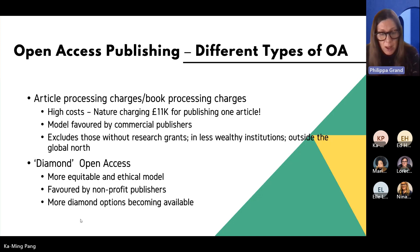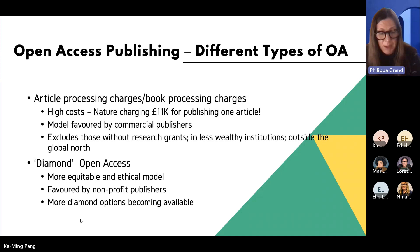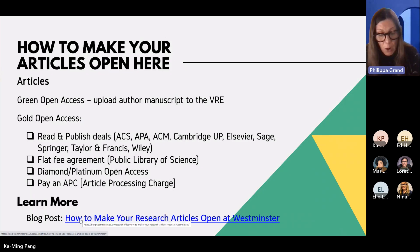There is an emerging model with no author-facing fees — called Diamond Open Access. That's the model that new open access publishers like University of Westminster Press are adopting, and it's viewed as a more equitable and ethical approach to open access. Links are included in the slide to help you find publishers that don't charge fees. I'm going to hand over to Nina now, who will talk about how Westminster can support you in publishing your work open access.